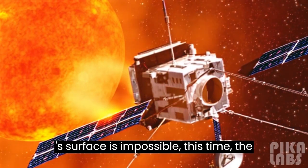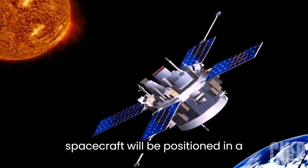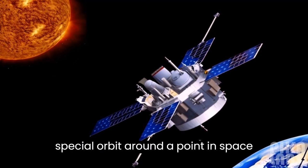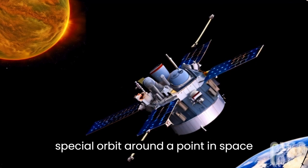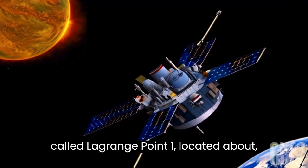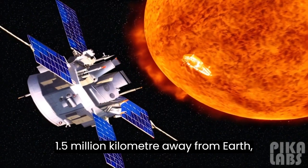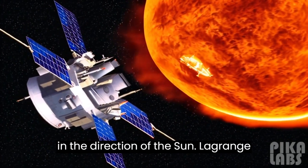Since landing on the sun's surface is impossible, the spacecraft will be positioned in a special orbit around a point in space called Lagrange point 1, located about 1.5 million kilometers away from Earth in the direction of the sun.